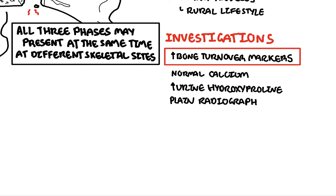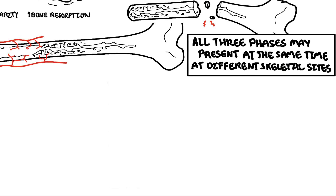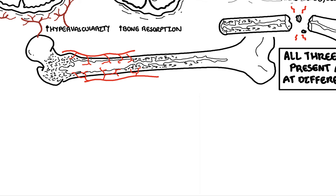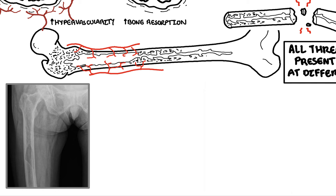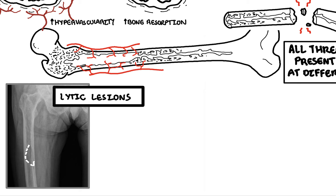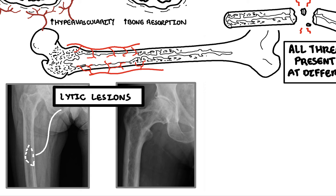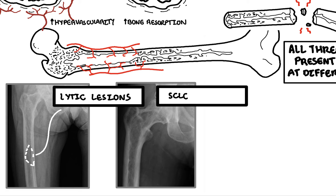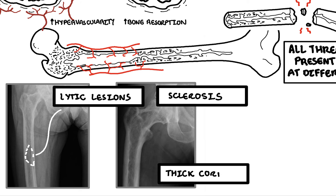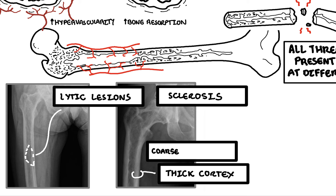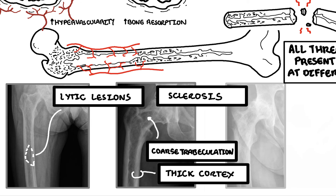Plain radiograph X-rays are very useful, and depending on the phase of Paget's disease, you can see different things. In the lytic phase, as shown in this X-ray of the femur, you can see lytic lesions — radiographically manifesting as a lytic wedge or blade-of-grass lesion. In the mixed phase, you can see both lytic and sclerotic lesions. Sclerotic lesions show thickened cortical bone, coarse and thickened trabeculae, and in the sclerotic phase you can also see bony enlargement and deformity from increased osteoblastic activity.